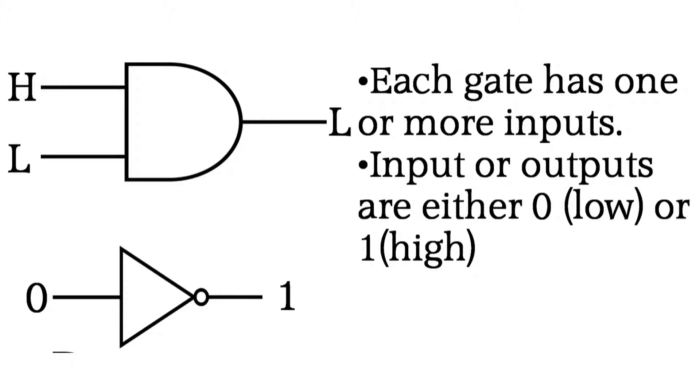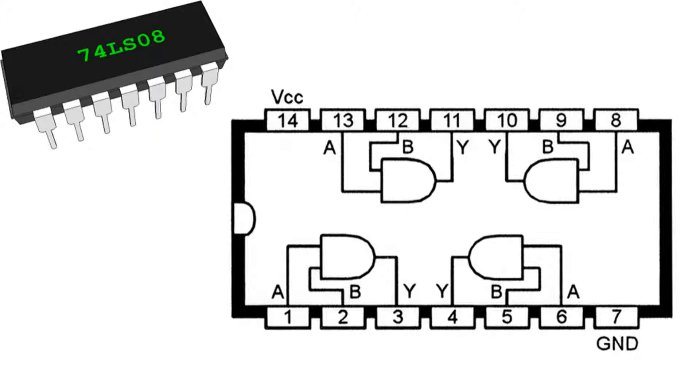If you apply voltage as input of a gate, the lower voltage would be state zero and the higher voltage would be state one. Output of the gate would be zero or one too. This IC has four AND gates. Each AND gate has two inputs and one output.